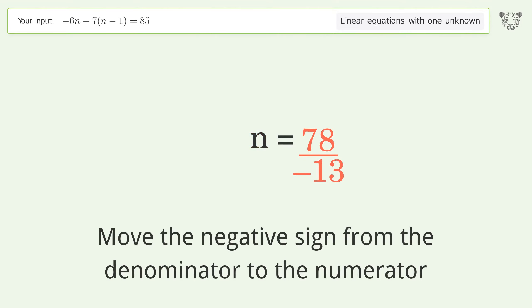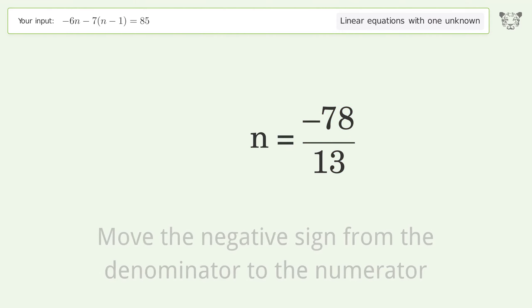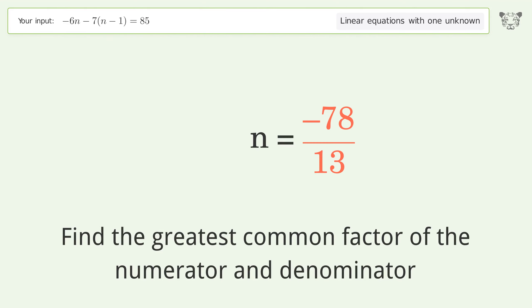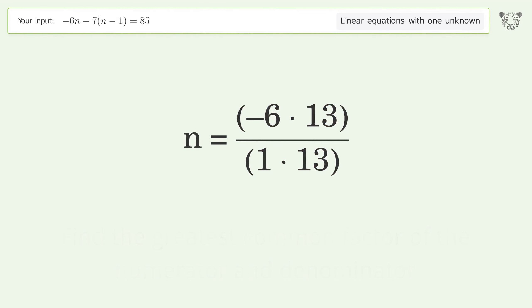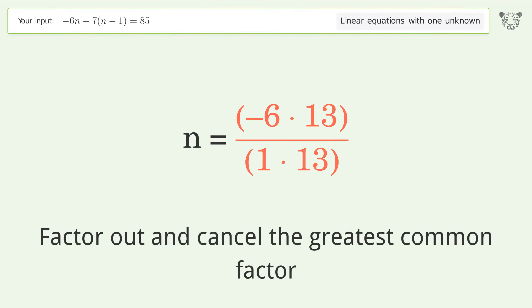Move the negative sign from the denominator to the numerator. Find the greatest common factor of the numerator and denominator. Factor out and cancel the greatest common factor.